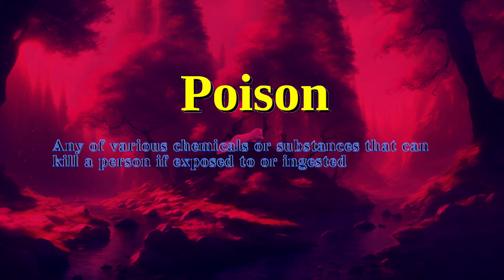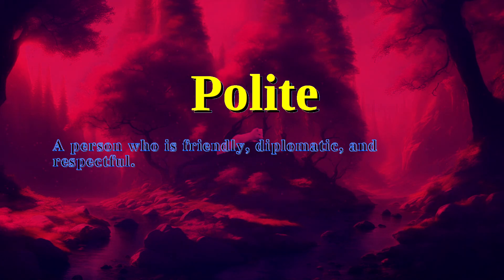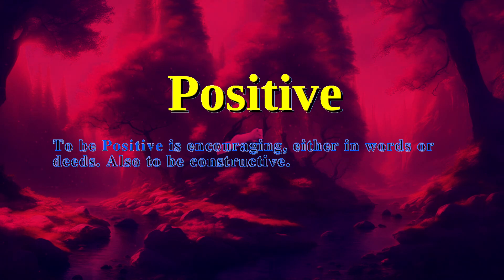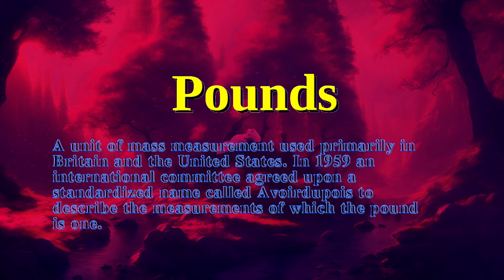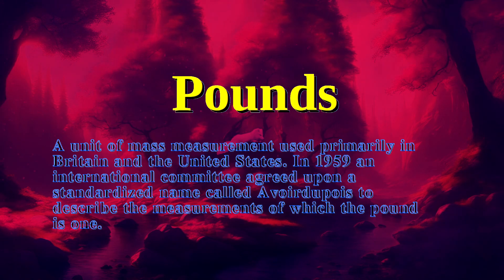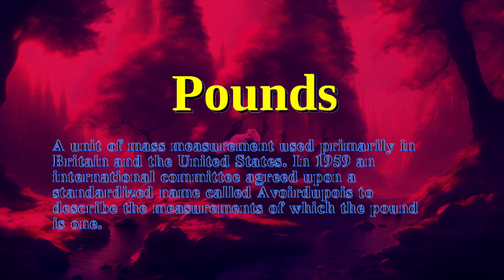Poison: Any of various chemicals or substances that can kill a person if exposed to or ingested. Polite: A person who is friendly, diplomatic, and respectful. Positive: To be positive is encouraging, either in words or in deeds. Also, to be constructive. Pounds: A unit of mass measurement used primarily in Britain and the United States. In 1959, an international committee agreed upon a standardized name called Avoirdupois to describe the measurements of which the pound is one.